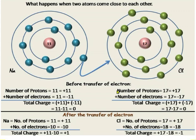After the transfer of electron, for sodium: number of protons = 11, charge due to protons = +11; number of electrons = 10, because it has given one electron away, so charge due to electrons = −10; total charge = +11 − 10 = +1. So after the transfer, sodium has gained one positive charge.